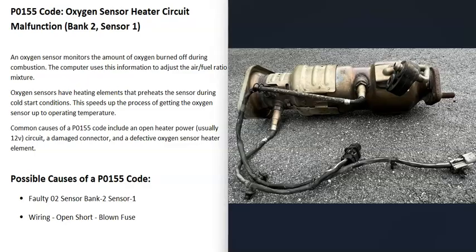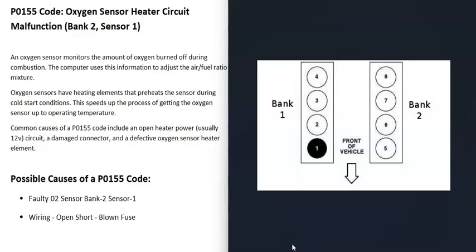If you have a V6 or V8 engine, the engine is going to have two banks. Bank one is always the side of the engine with the number one cylinder, so if you Google your cylinder location on your particular engine, that'll be the bank one side and the opposite is bank two. If you have a four cylinder engine it wouldn't matter because you only have one bank.